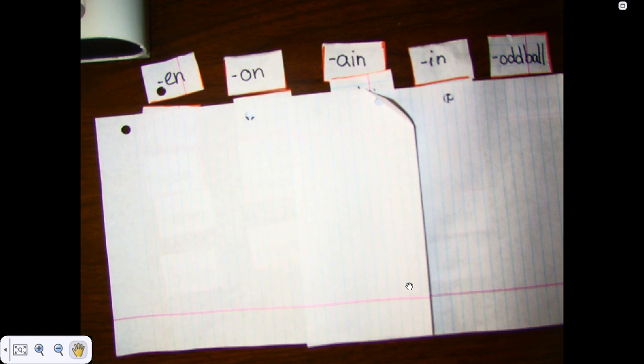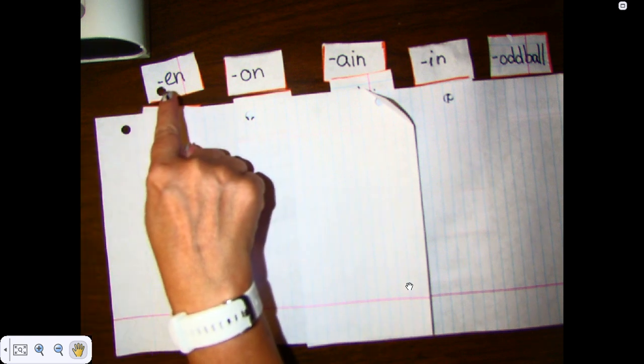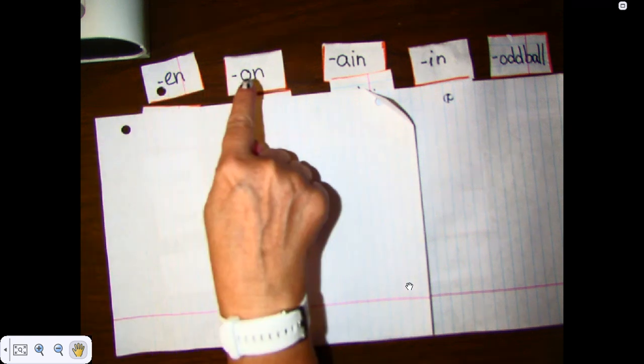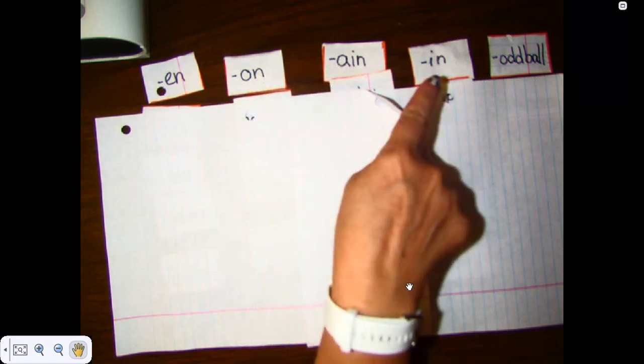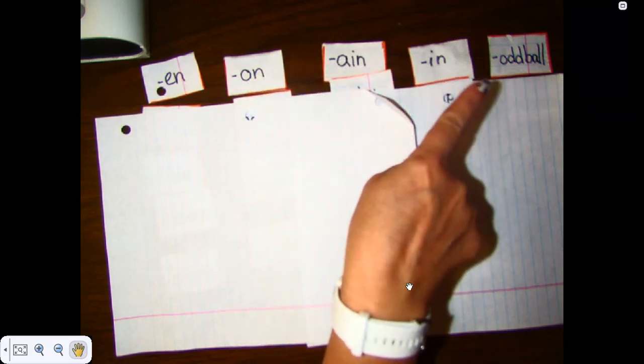Good morning, boys and girls. Today is day three in our final unaccented syllables with the en ending. And they can be written with en, makes an n sound, o-n, a-i-n, or i-n.